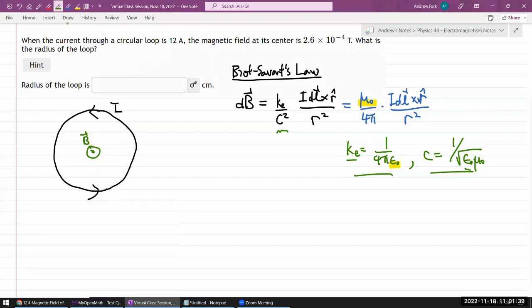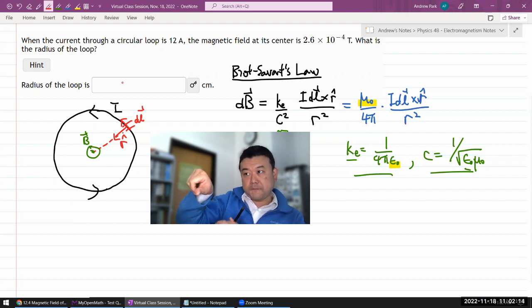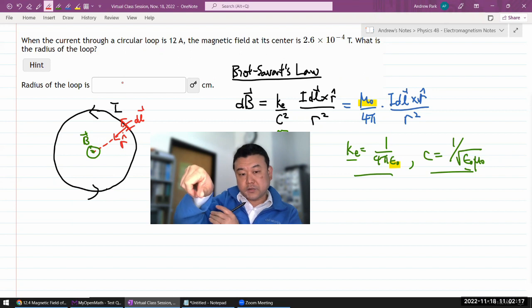So when you're applying Biot-Savart's law, what you're imagining is one of these small segments of current. This is my DL. And here, the direction of the DL, this is my DL cross, this is my direction R-hat. R-hat always points from the source to the point we are calculating the field. When you do DL cross R-hat, the direction of the cross product is out of the screen.